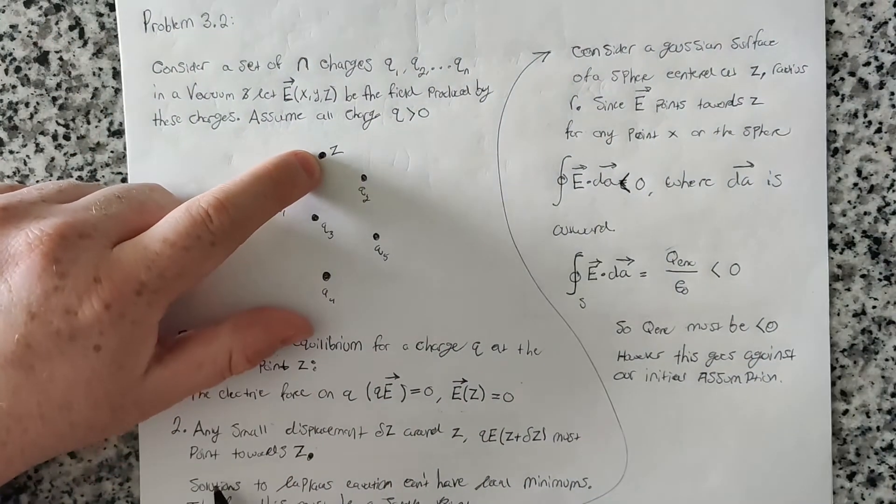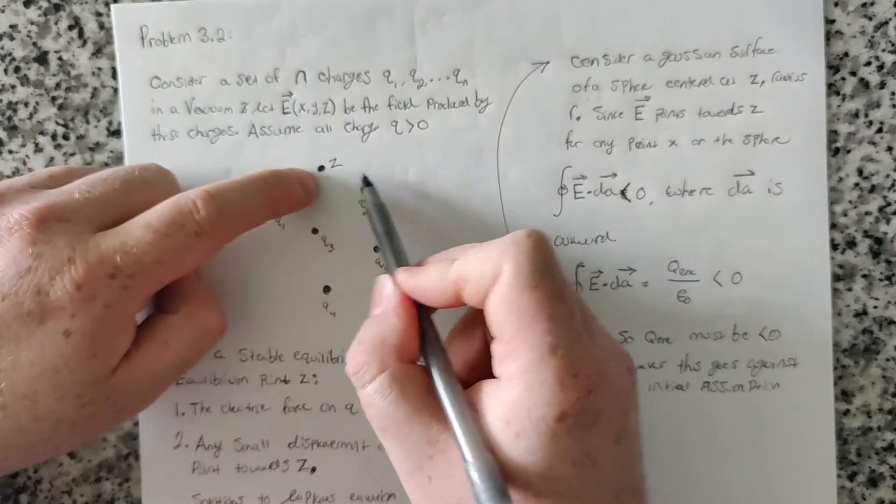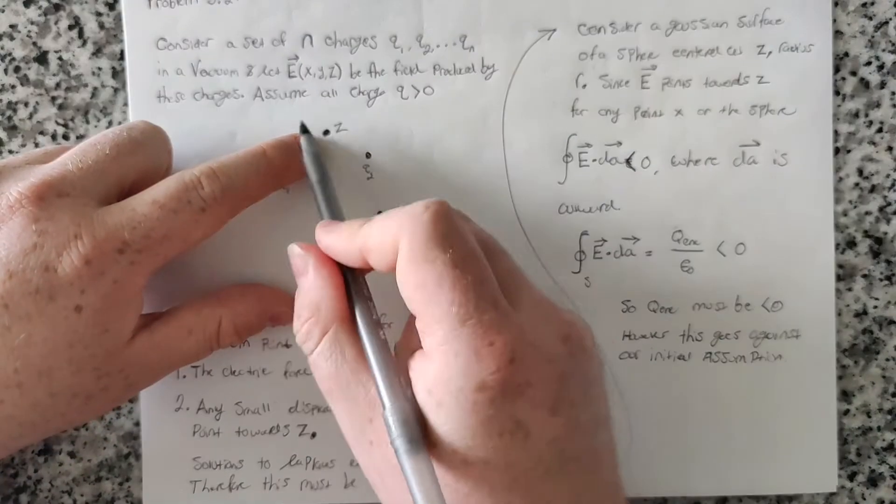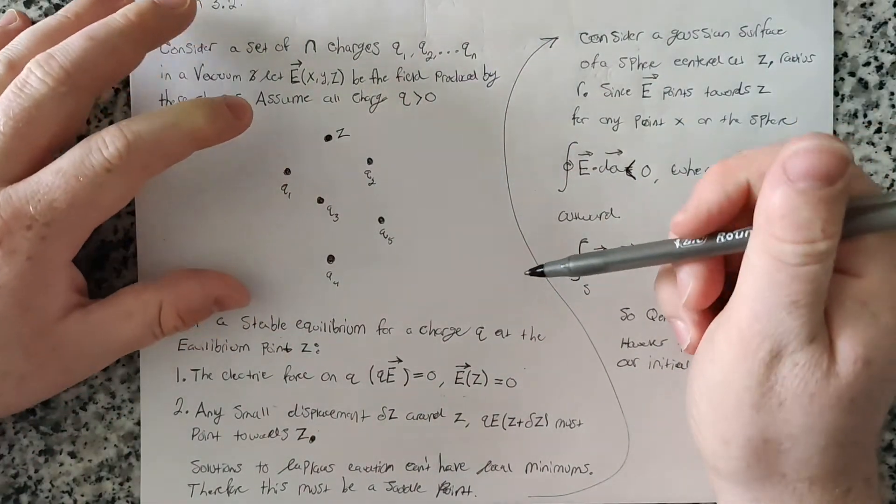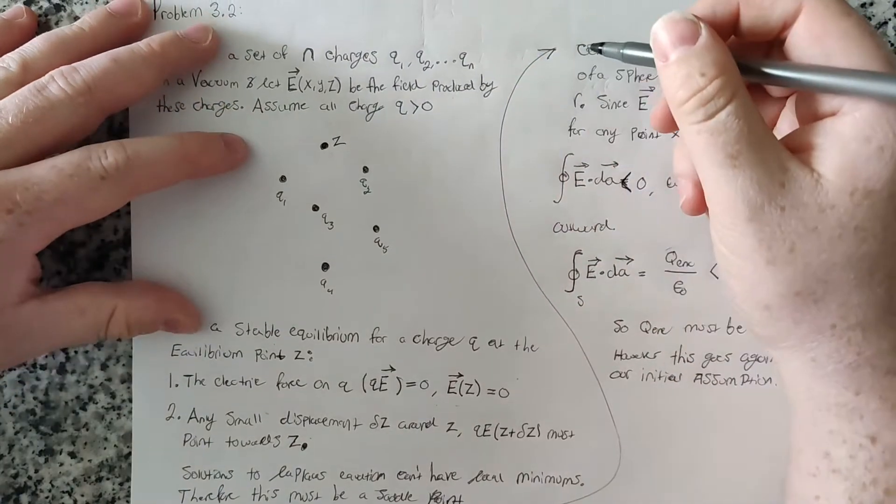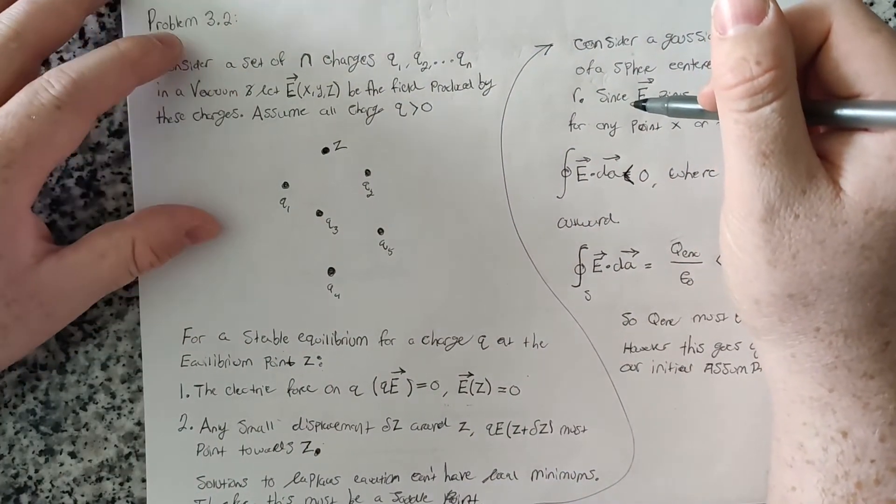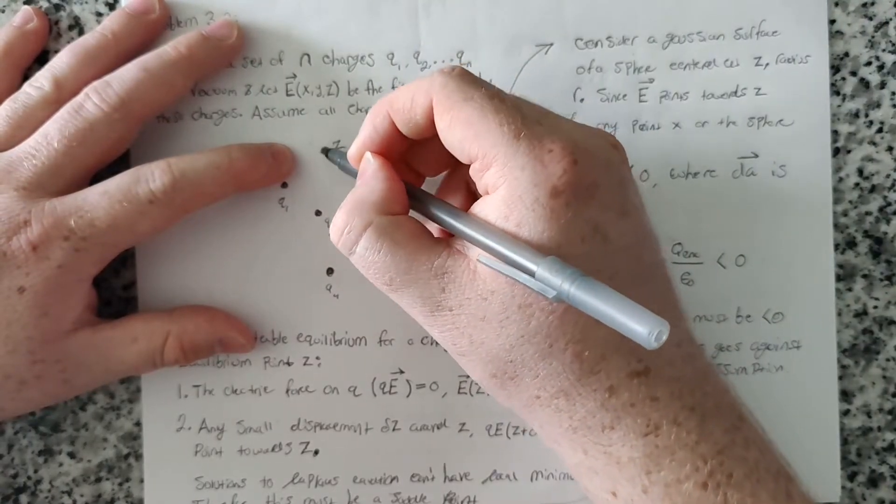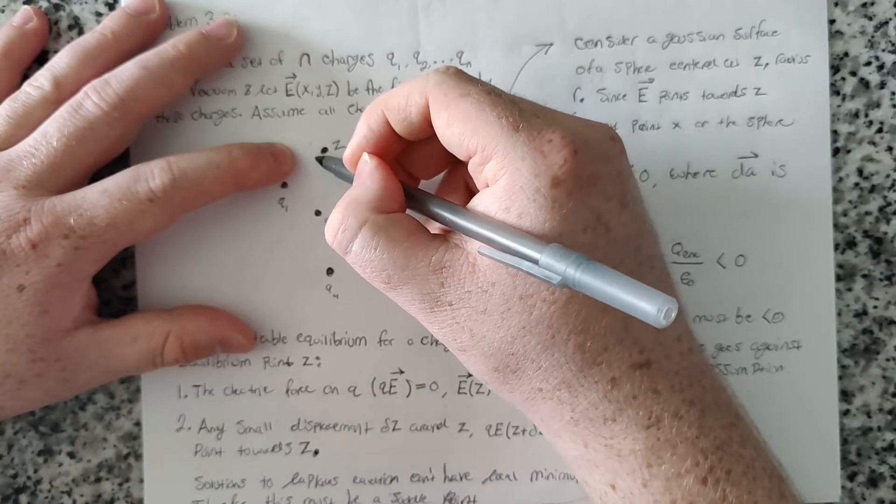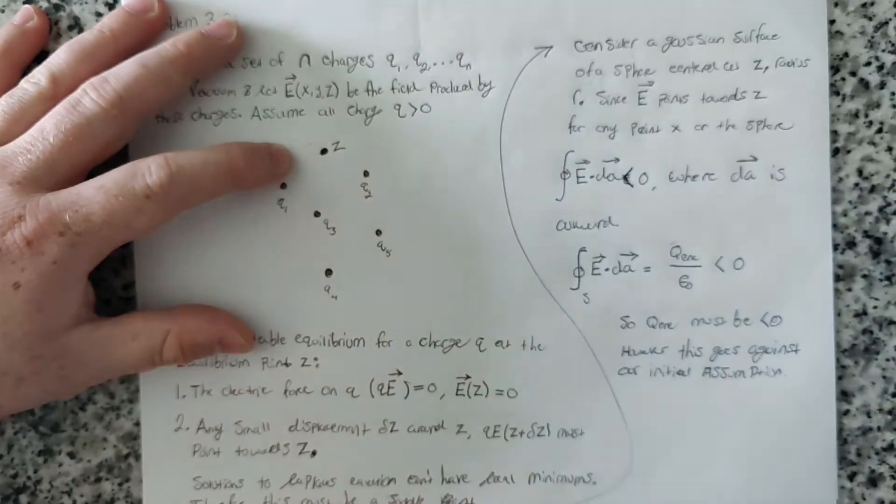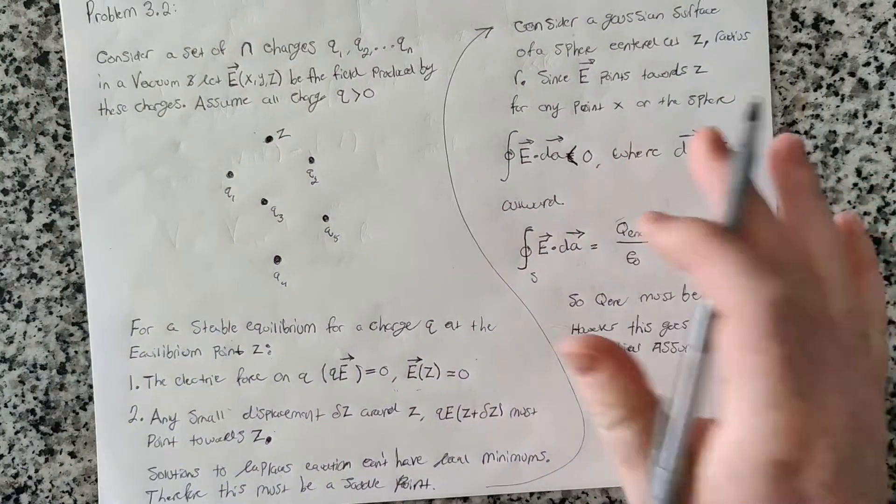Also, for this to be a stable equilibrium point, any small displacement delta Z around the point Z should point inwards towards Z. That's what it means to be a stable equilibrium. It'd be like a valley in the potential field. Any displacement of the charge around Z, the charge should move back and rest at Z.